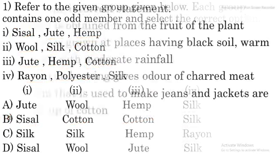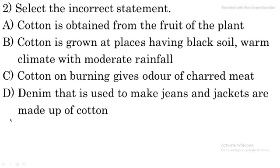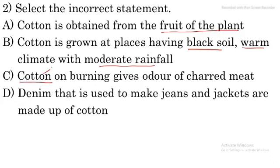Question number two: select the incorrect statement. Cotton is obtained from the fruit of the plant — this is a correct statement. Cotton is grown at places having black soil, warm climate, and moderate rainfall — this is also correct. Cotton on burning gives the smell of charred meat — this is NOT true, because when cotton burns it gives the smell of burning paper, not charred meat. Denim used to make jeans and jackets is made up of cotton — this is true. So the incorrect statement option is the right answer.